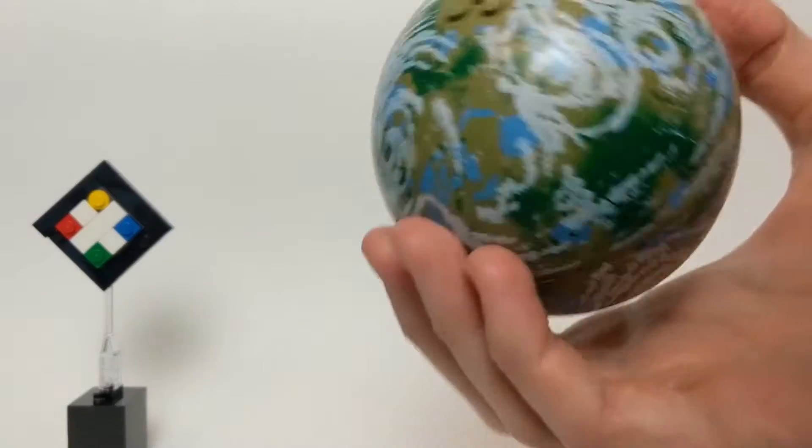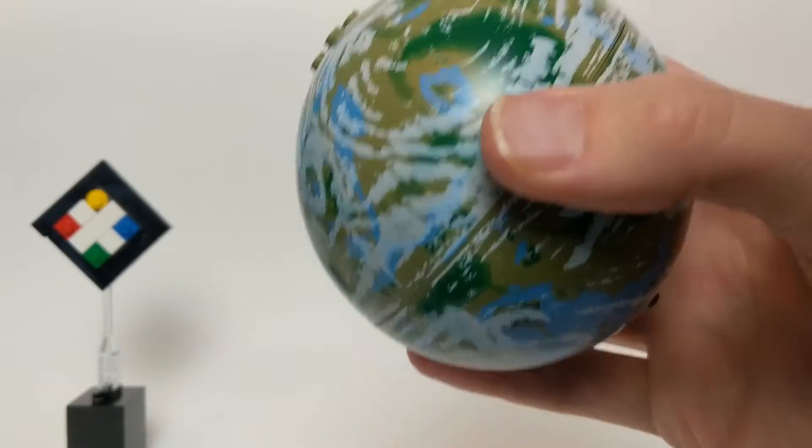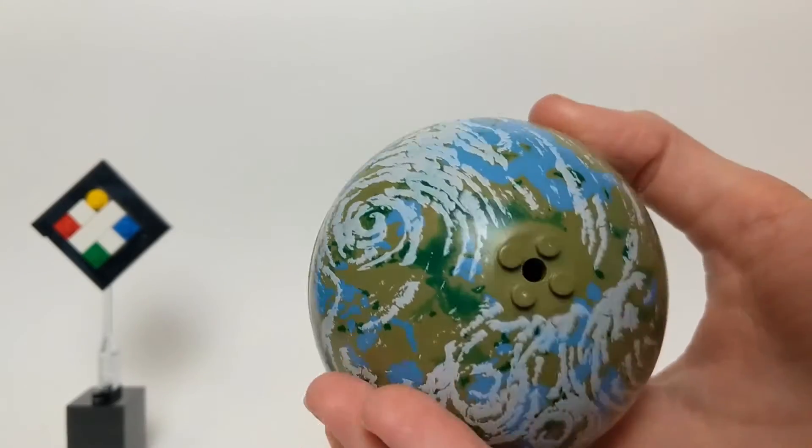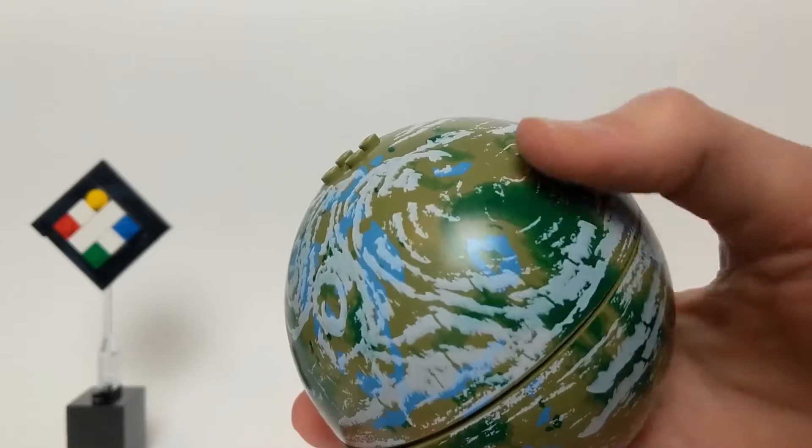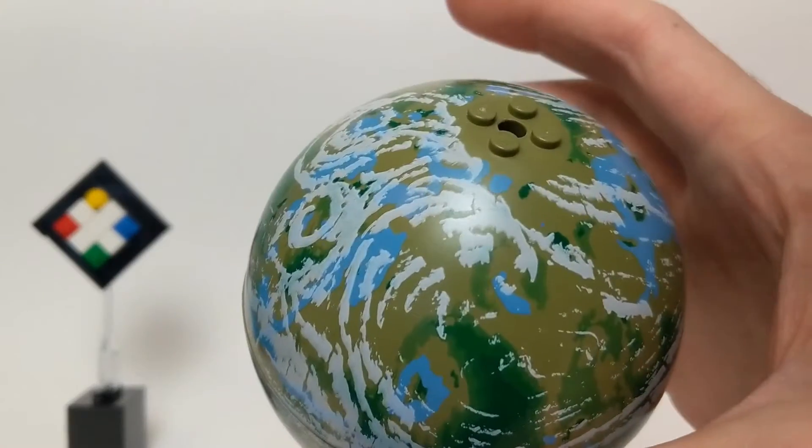This is probably the most accurate LEGO sphere that you'll find, just because technically it's impossible to make an actual LEGO sphere, since a sphere has infinite points of curvature along the outside.